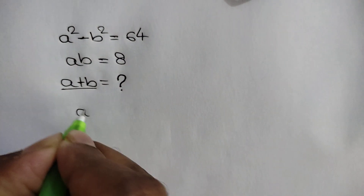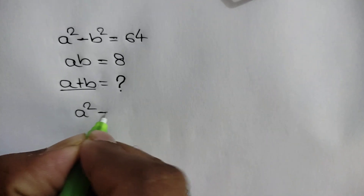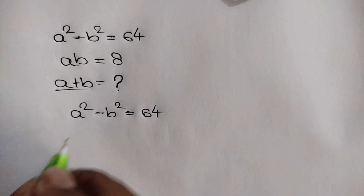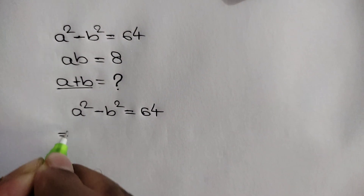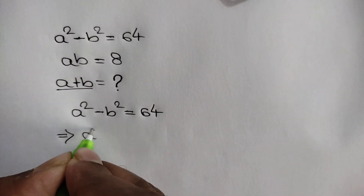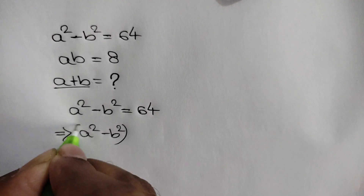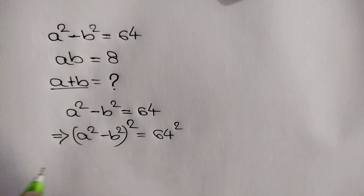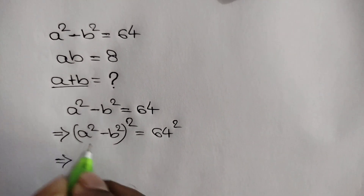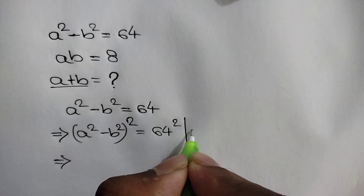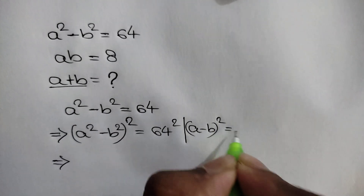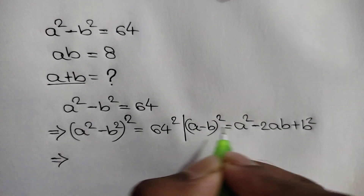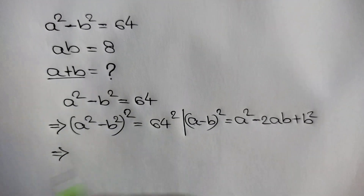We have given a squared minus b squared is equal to 64. Now squaring both sides, we can apply the rule: a minus b whole squared is equal to a squared minus 2ab plus b squared, where a is equal to a squared and b is equal to b squared.